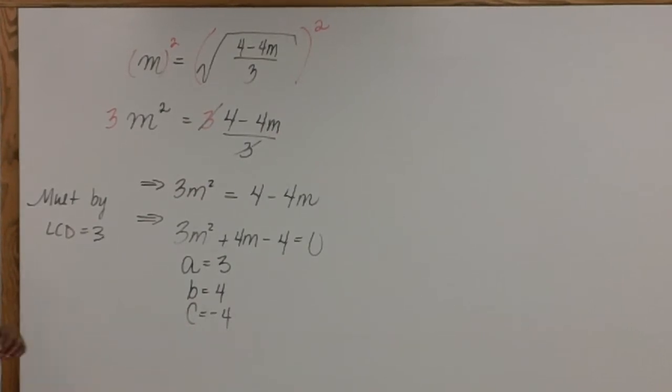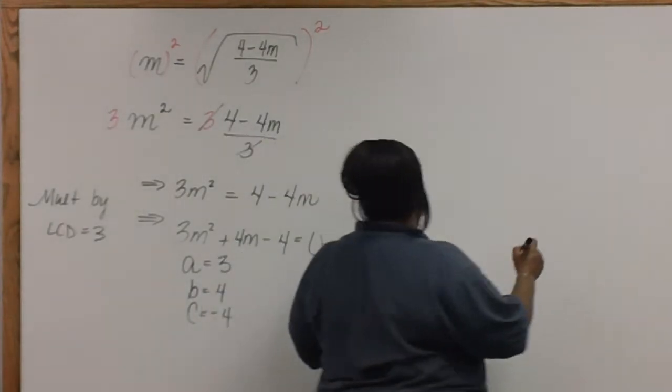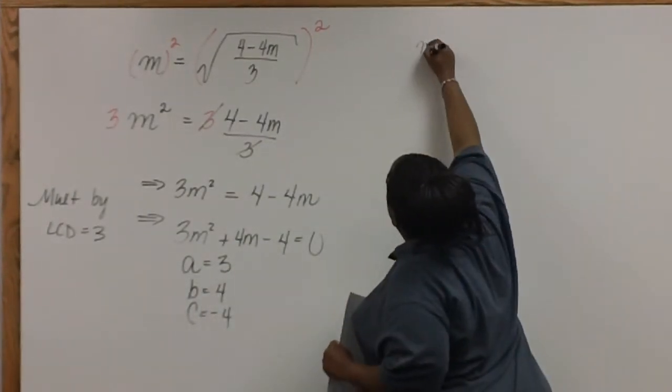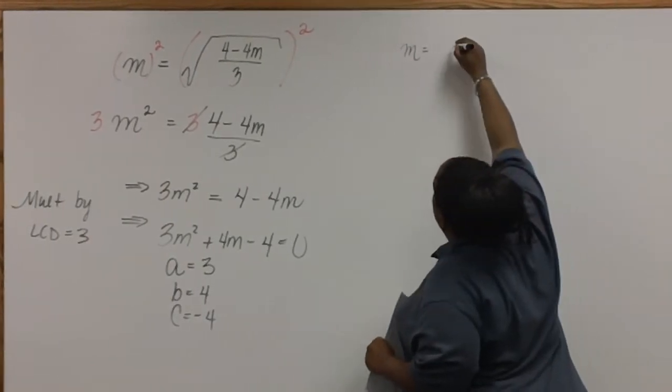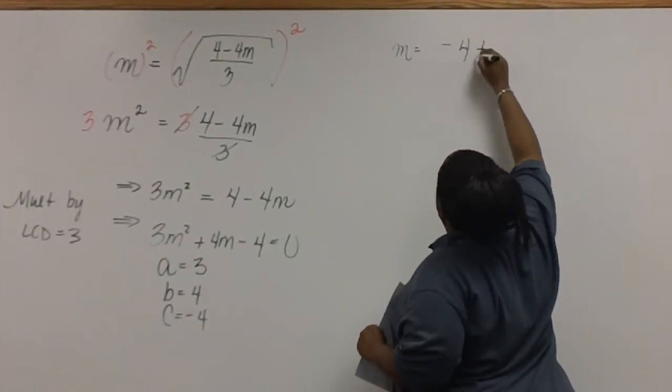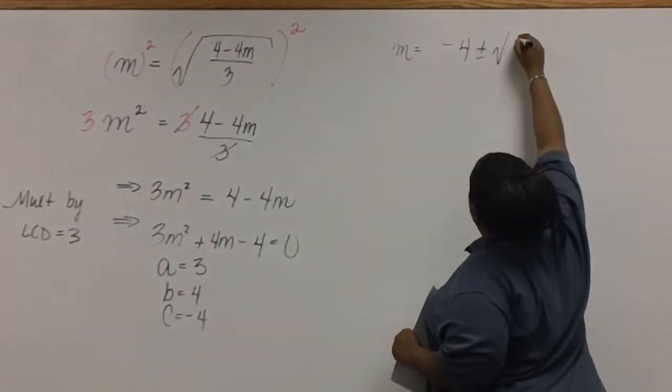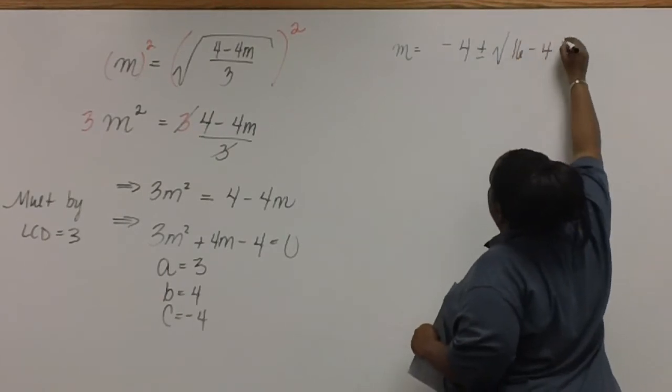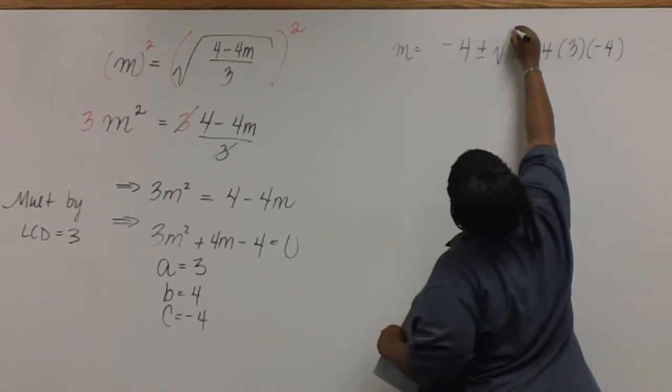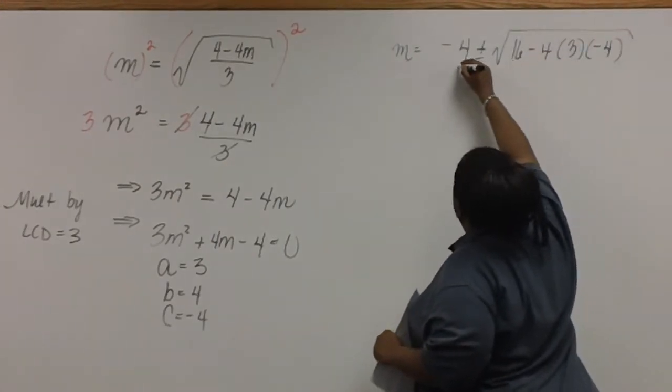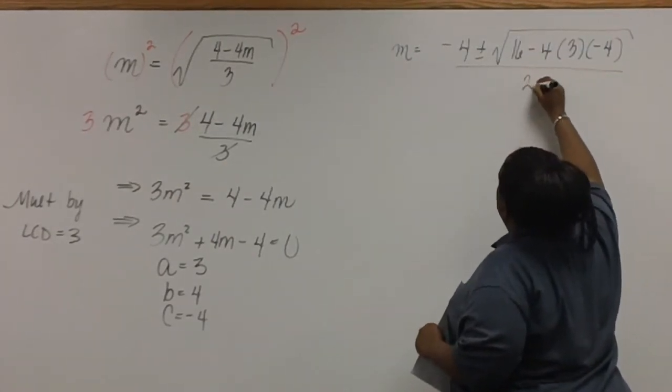Now we're ready to use our quadratic formula. Don't forget to change the sign on your B. And this is all divided by 2 times A.